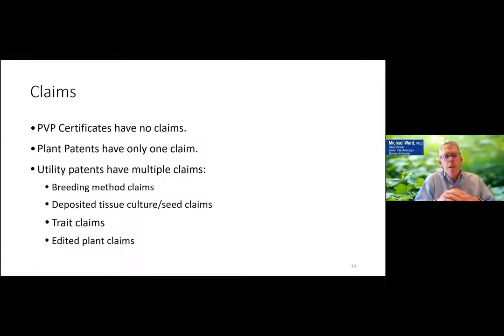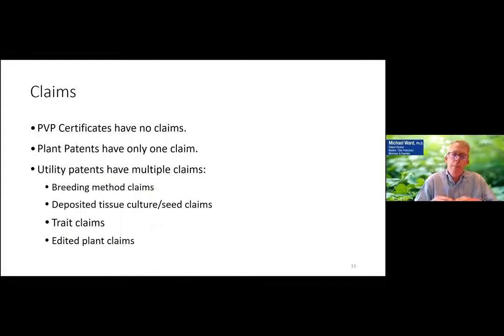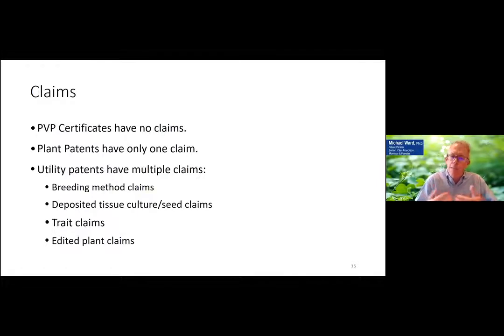A bit about claims: PVP certificates have no claims at all. Plant patents have only one claim. Utility patents can have all sorts of different types of claims — you can claim breeding methods, deposited tissue culture, trait claims, edited plant claims, and more. There's a variety of different ways that you can protect orange trees with utility patents.